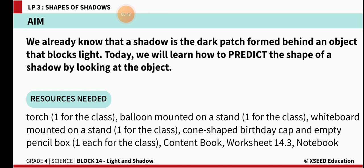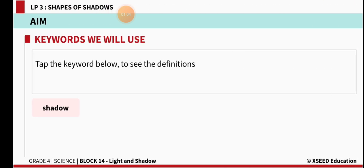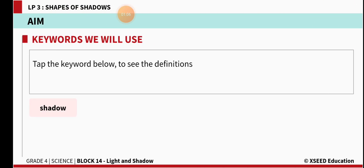You need a torch light, a balloon mounted on a stand, a whiteboard mounted on a stand, a cone-shaped birdie cap, an empty pencil box, your content book, workbook, and notebook. You need all these things to learn this particular content.